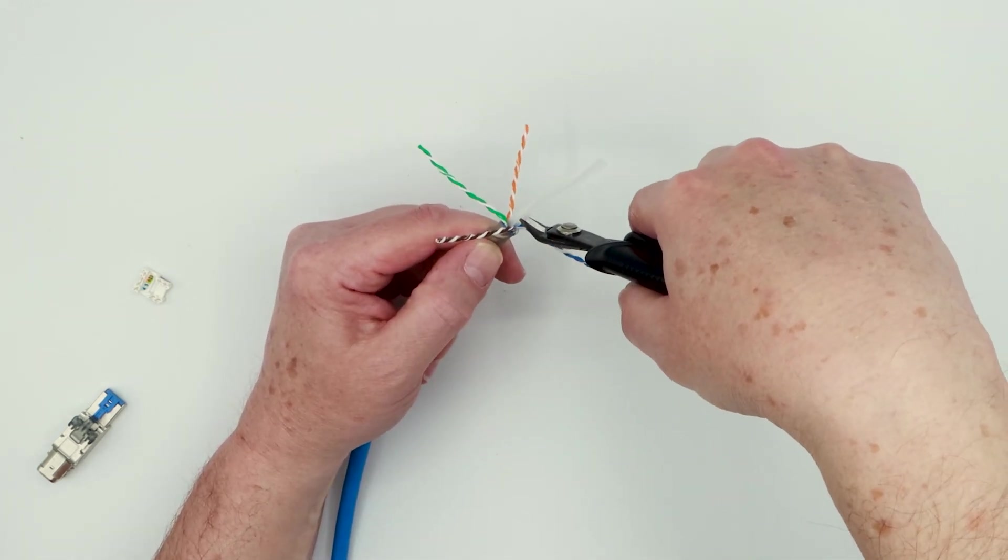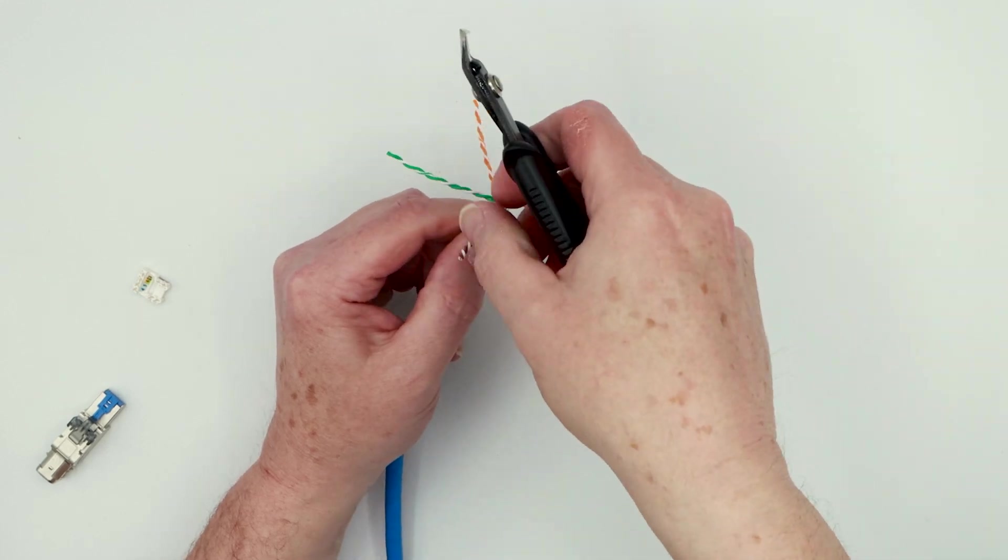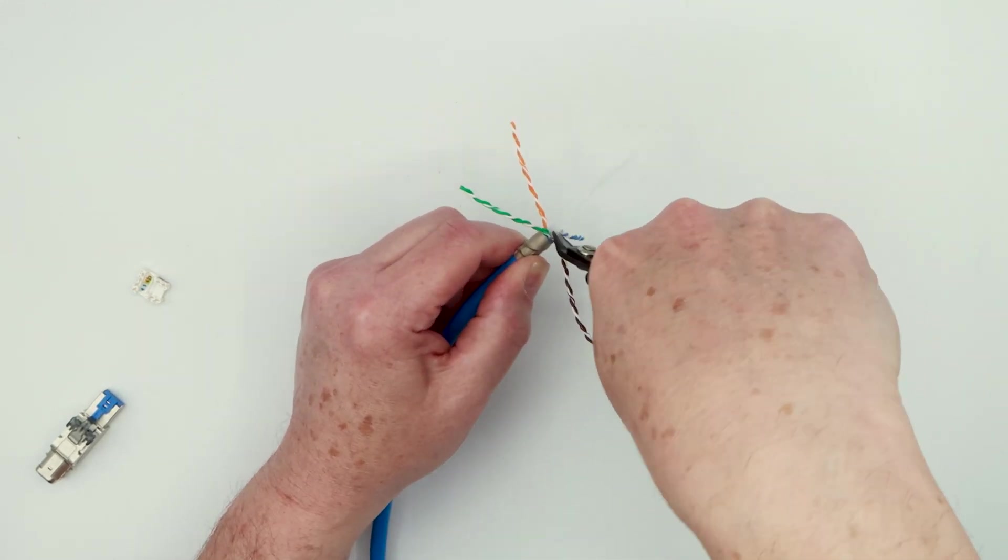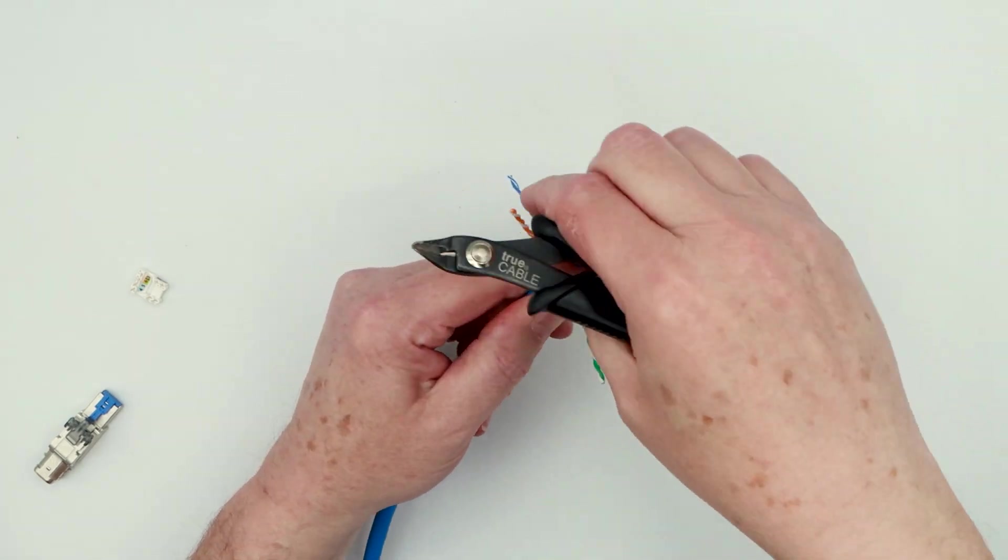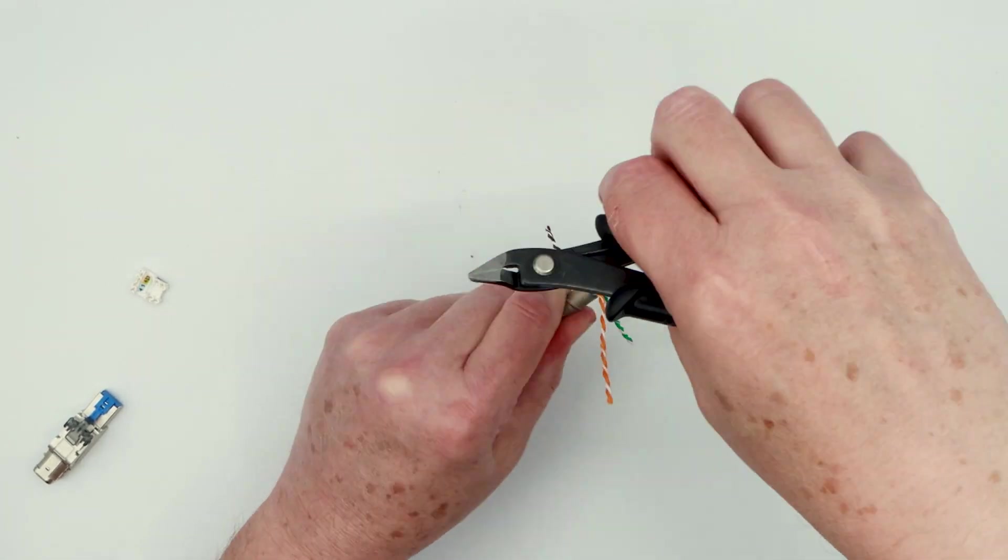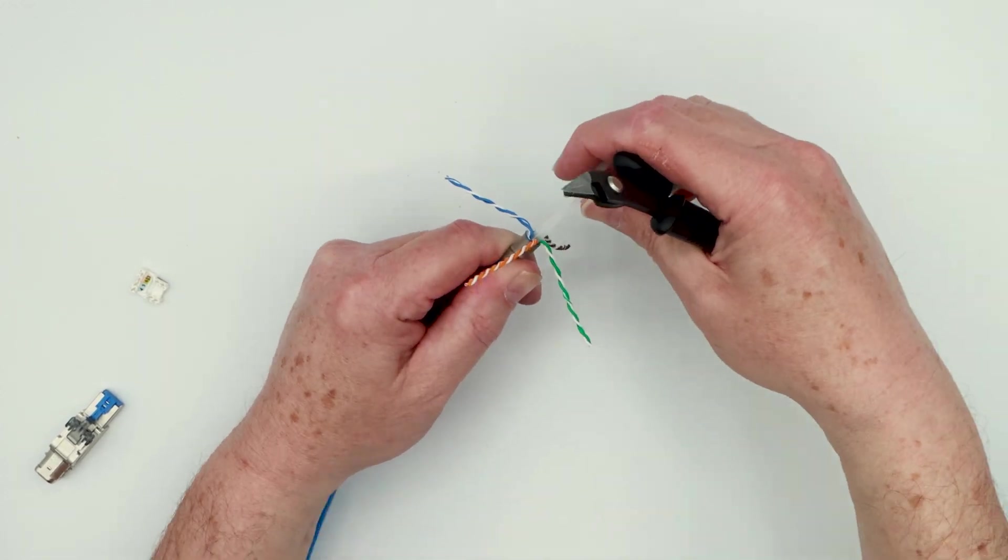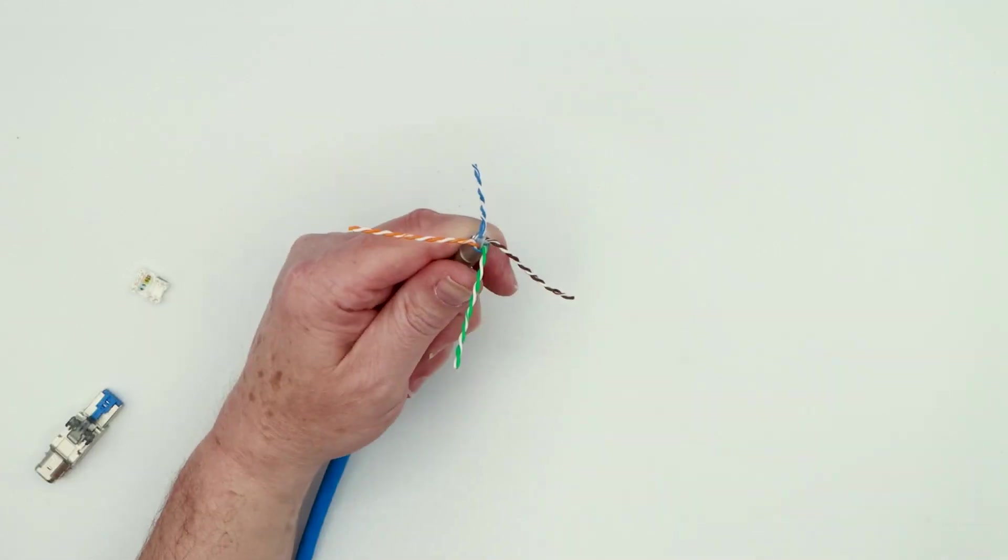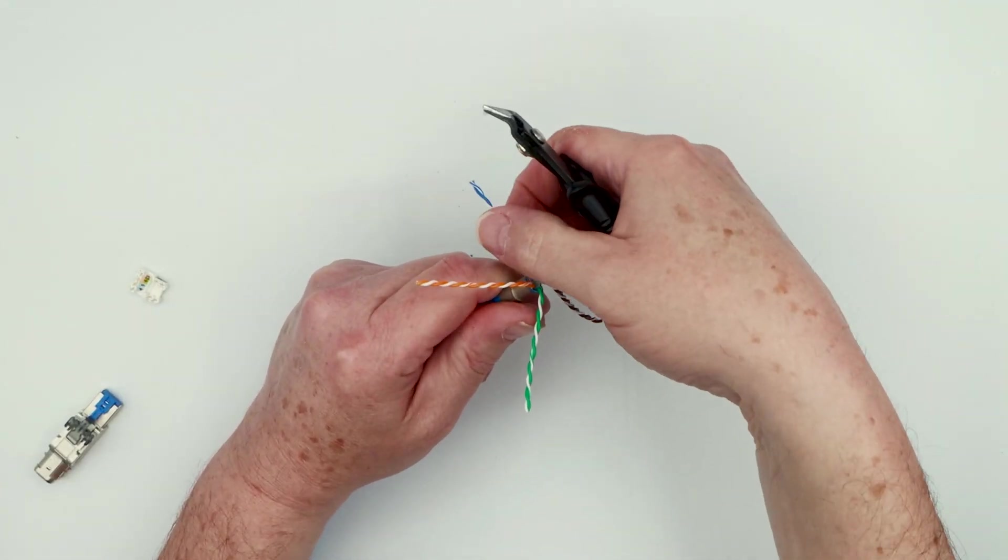The reason we do it this way is to leave as little spline left as possible. Once you've got all four nips made, twist, remove. And we have a relatively clean surface here to work with.